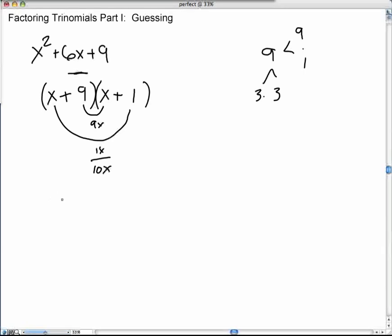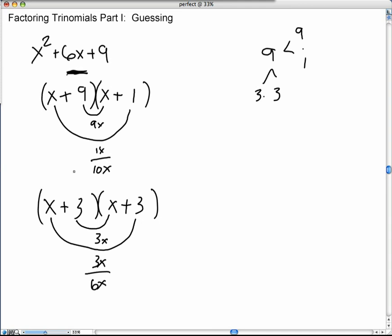So, we can try again, and use the other factors, which is 3 and 3. And you'll notice that, again, x times x is x square, and 3 times 3 is 9, and if we say 3 times x is 3x, and x times 3 is another 3x, that gives you 6x, which is the linear coefficient.